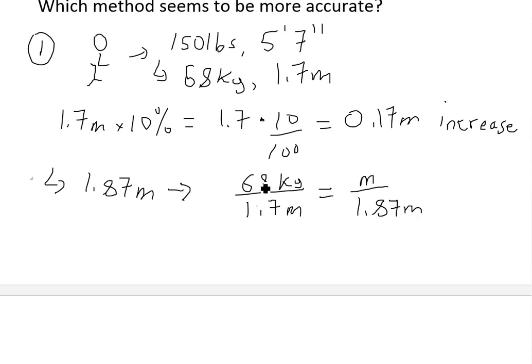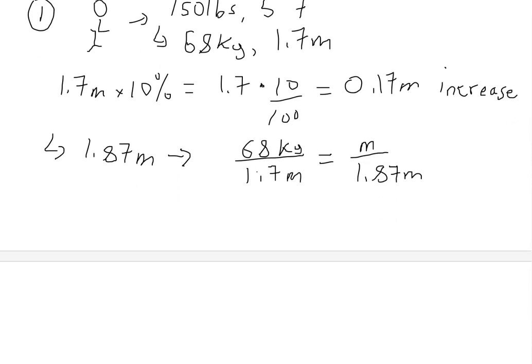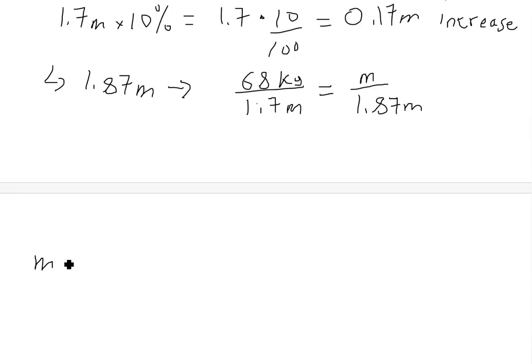So you could just either go 10% of 68 and then add it up, or you could just solve it this way. So we get m is equal to 68 times divided by 1.7 times 1.87.